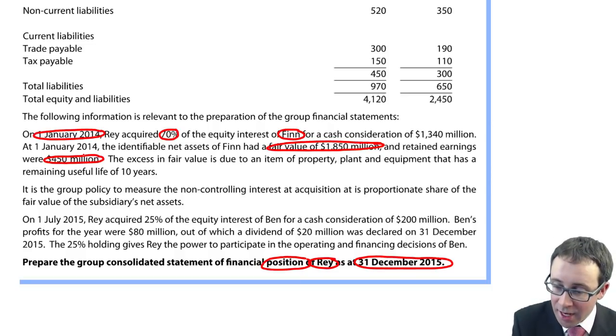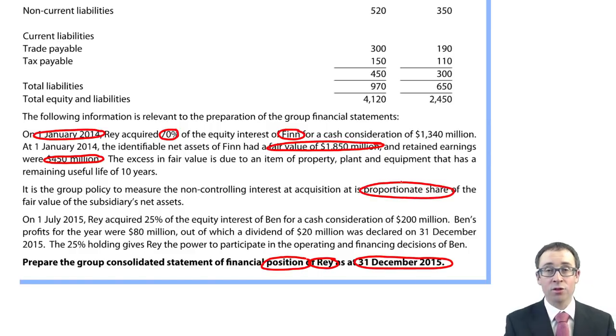Group policy is to measure NCI at its proportionate share of the fair value of the subsidiary's net assets. You don't see this much from F7 because everything there was on the full goodwill method and the fair value of the NCI. Here, we're looking at the proportionate share of net assets.